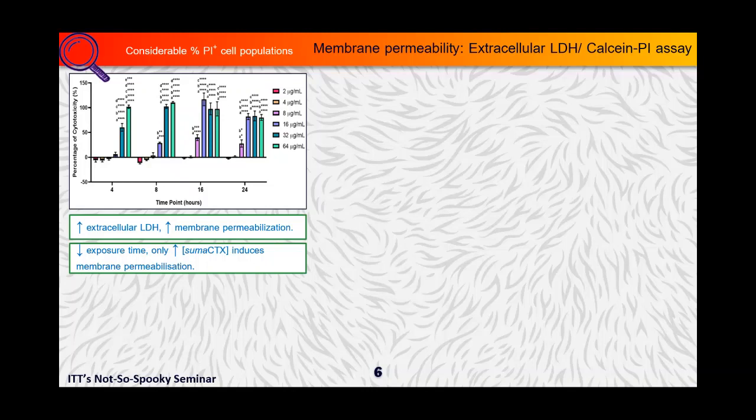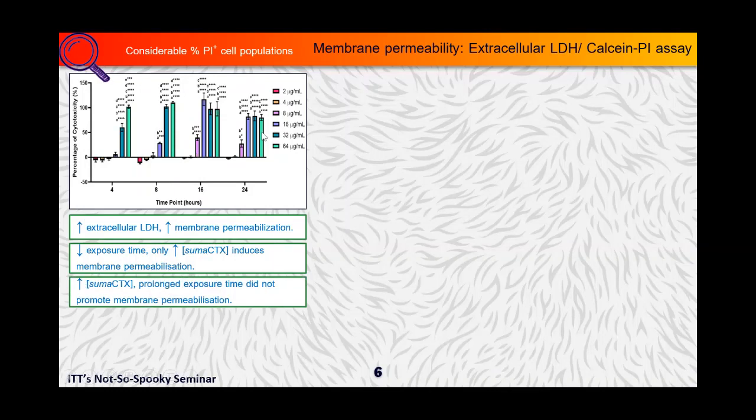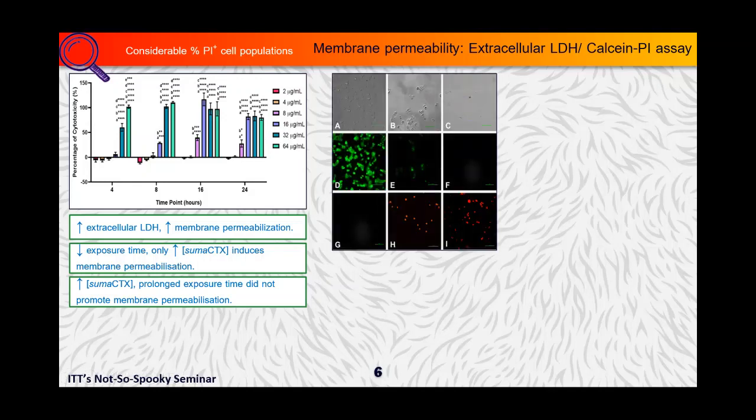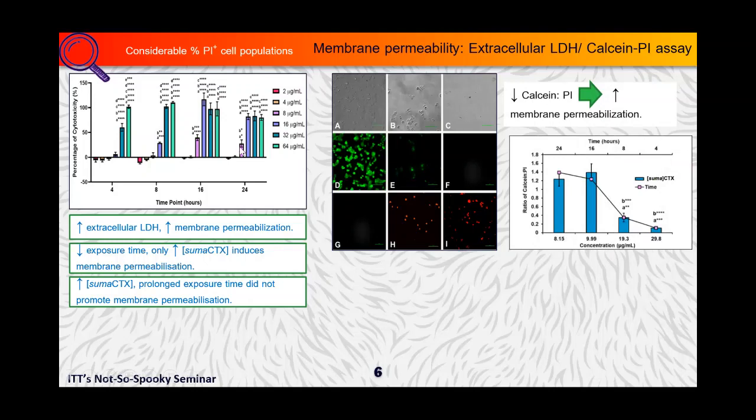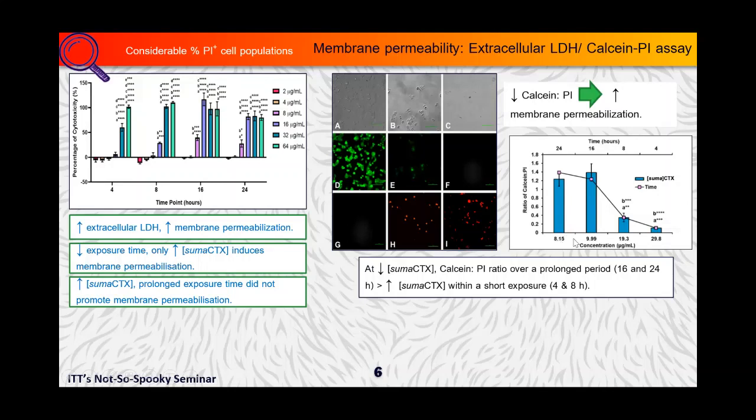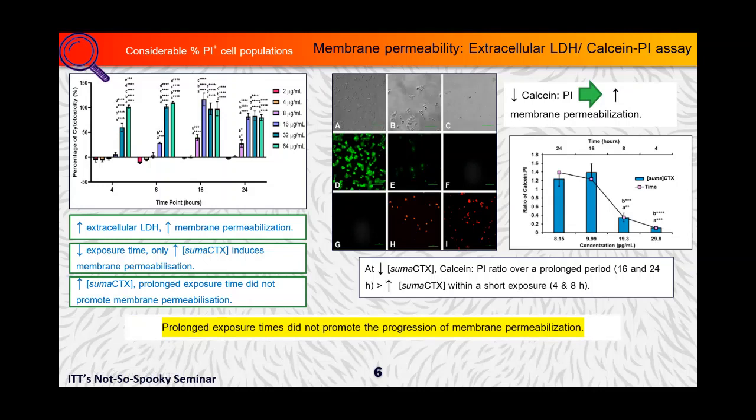As the toxin concentration increased, we can see here that at lower exposure time, only high toxin concentrations are capable of inducing membrane permeabilization. But as the toxin concentration actually increased, prolonged exposure time did not promote membrane permeabilization. From the quantitative data shown by the calcein and PI assay, the calcein and PI ratio was actually higher at lower toxin concentration over prolonged exposure time. But as the concentration increased, even a shorter exposure time will have a lower calcein and PI ratio. So an increased toxin concentration causes a more prominent membrane permeabilization, which suggests that prolonged exposure time did not promote the progression of membrane permeabilization. So collectively, our results demonstrate a more rapid onset of membrane permeabilization when the cells were exposed to high concentration of toxins within a short period of time.